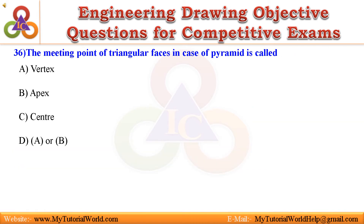Question 36. The meeting point of triangular faces in case of a pyramid is called: A. Vertex, B. Apex, C. Center, D. A or B. Answer is: A or B.